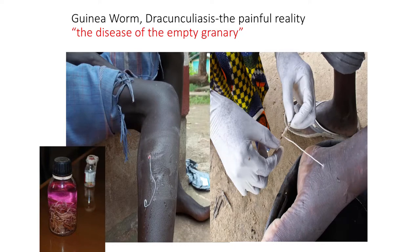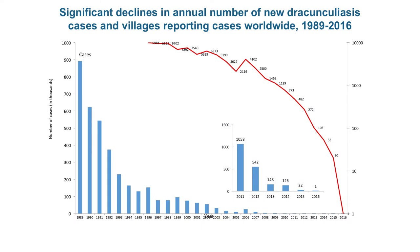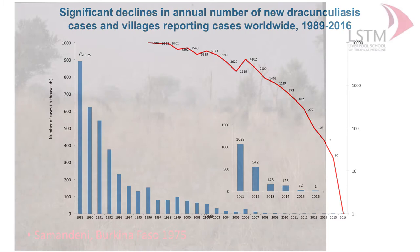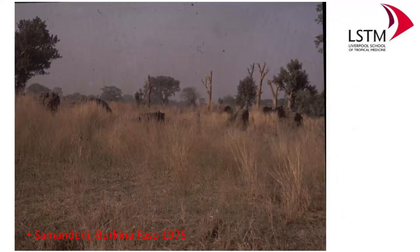Down to 2016, there were 22 cases; last year 30 cases — 15 in Ethiopia and 15 in Chad. Unfortunately the problem in guinea worm is animal infections, particularly dogs in Chad, which we're trying to resolve.